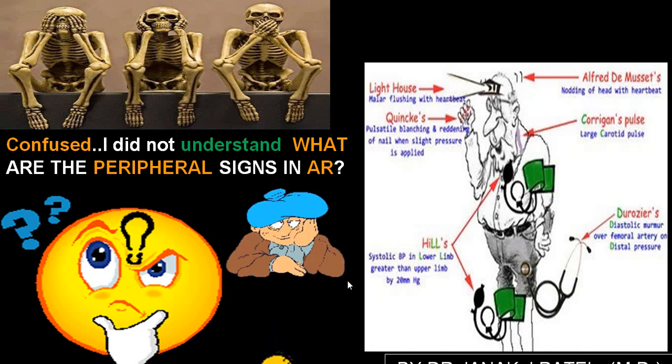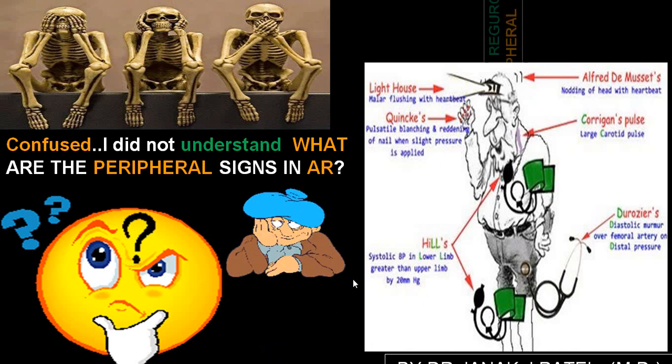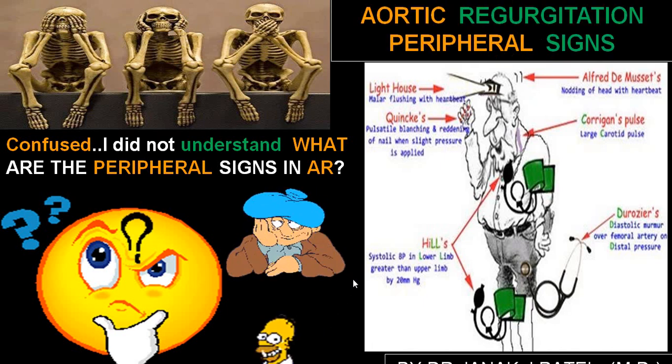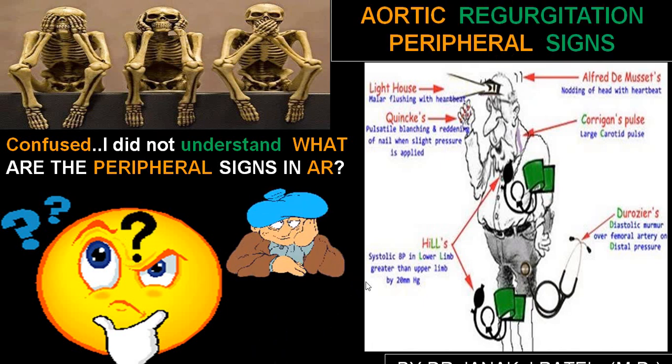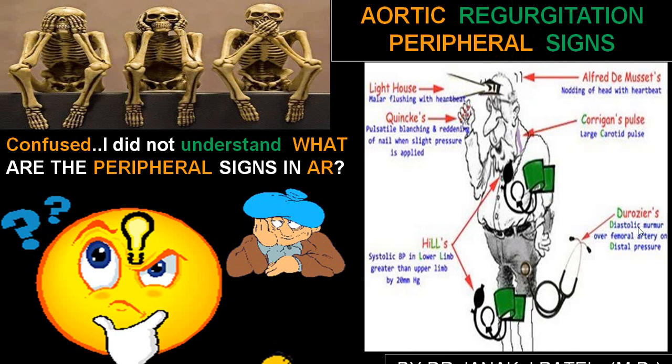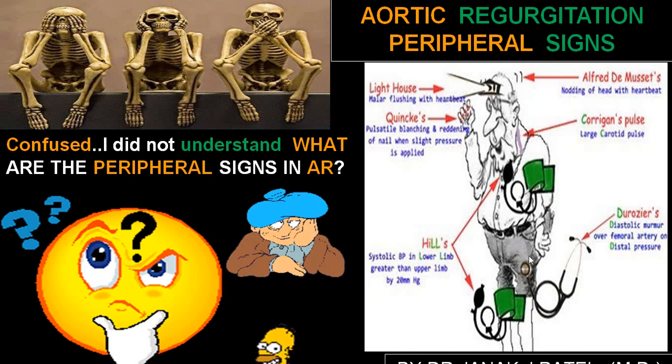Here is a slide showing some of the signs in aortic regurgitation: Lighthouse sign, Alfred De Musset sign, Quincke's sign, Corrigan pulse, Hill's sign, Duroziez's murmur, etc. We'll be discussing each separately in detail.